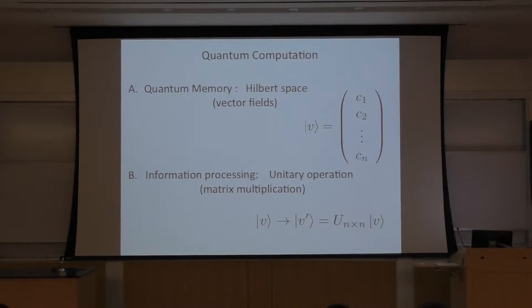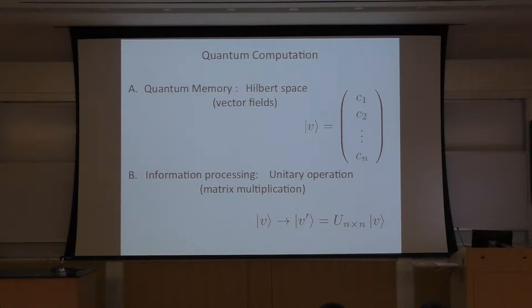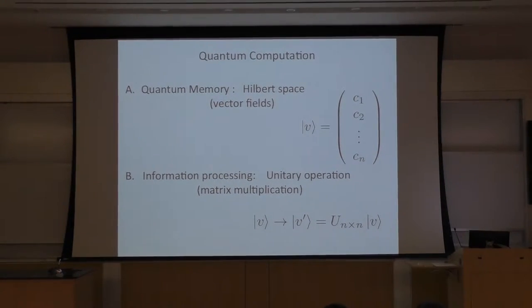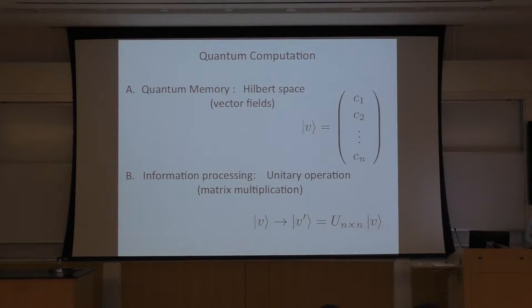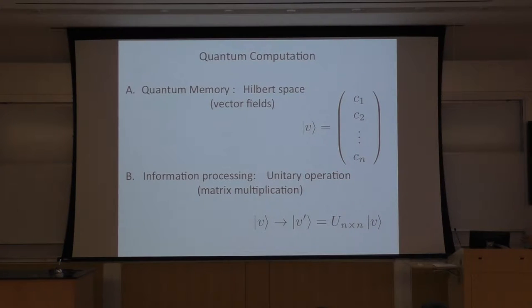But first of all, what is a quantum computer? Any quantum computer is formed of two ingredients. First, it contains quantum memory, which is nothing but the Hilbert space and vector fields in the Hilbert space. We need to process and change the memory by time, so we need information processing, which can be accessed by acting on these vectors by unitary matrices. With these two things, we can obtain a quantum computer.